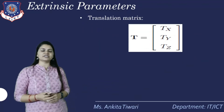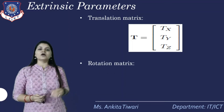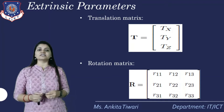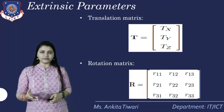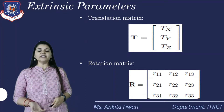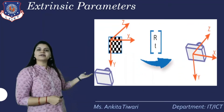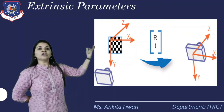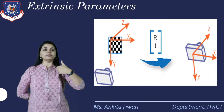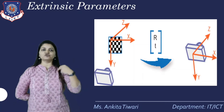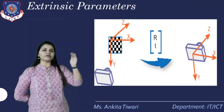The translation matrix for extrinsic parameters is defined by T, where Tx, Ty, and Tz are the translation vector components. The rotation matrix R is defined with elements R11, R12, R13, and so on, using cosine and sine of angle theta. Both rotation R and translation T are applied sequentially — first rotation, then translation — to perform the world-to-camera transformation.